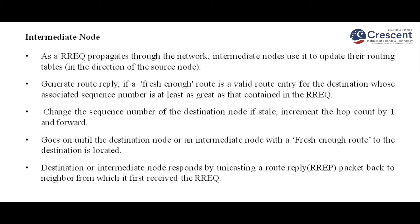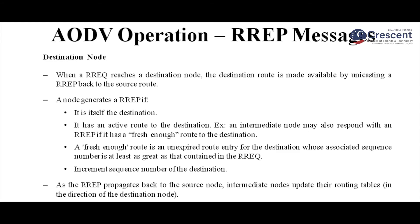Moving to the destination node — this process continues until it reaches the destination. When the route request reaches E, the destination node makes itself available by unicasting a route reply back to the source node A. A node generates a route reply if it is the destination and has an active route — meaning a fresh enough, unexpired route entry for the destination whose associated sequence number is at least as great as that in the route request. It then increments its own sequence number and gives a reply to the source.